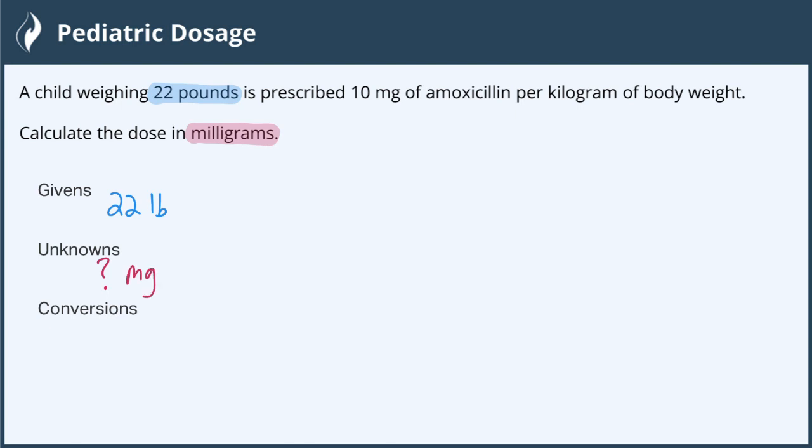We are also given a conversion here that says that 10 milligrams of amoxicillin is per kilogram of body weight. So we could say 10 milligrams is equal to 1 kilogram of body weight.